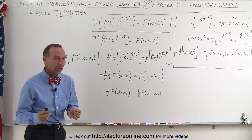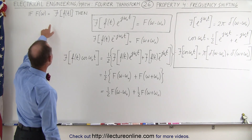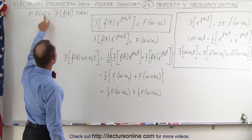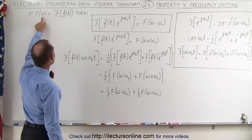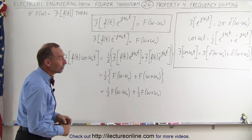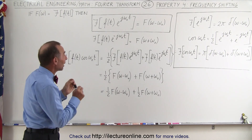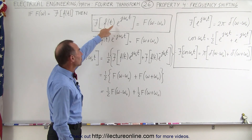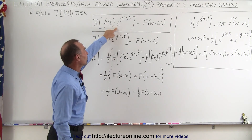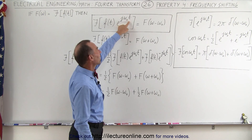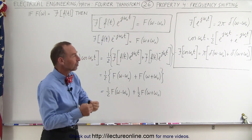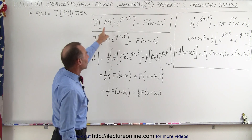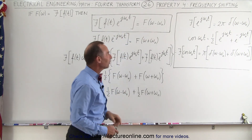How does that work? Well, let's say that we have a function f, and if we take the Fourier transform we get F(ω), omega of course being the frequency in the frequency domain. Now what happens when we take the original function in the time domain and multiply it by e to the j omega sub nought t — omega sub nought being a constant frequency — then we have a shift in the frequency domain.